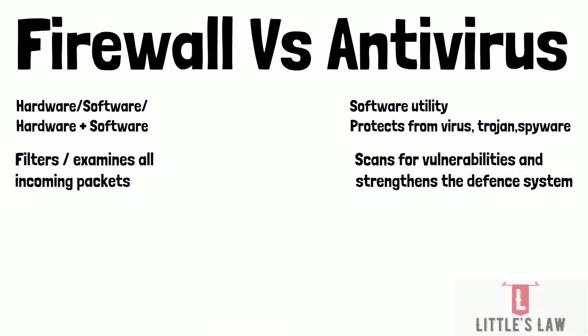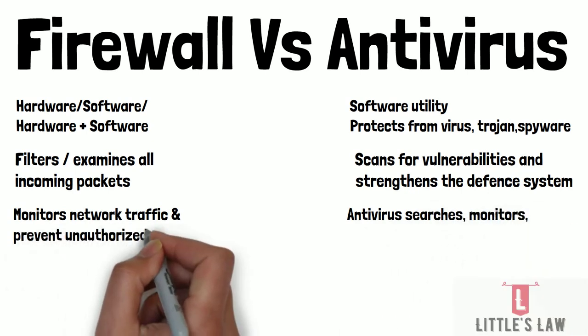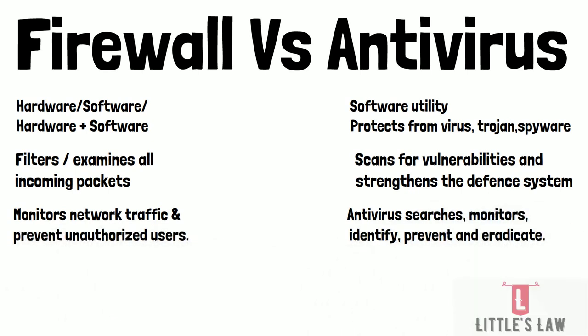When we talk about a firewall, it is referred to as a packet filter because it examines all incoming data packets for potentially malicious information. On the other hand, the antivirus scans for vulnerabilities in the computer system and makes the necessary adjustments to strengthen the system's defenses. The firewall's job is to monitor network traffic and prevent unauthorized users from accessing the system, while the primary role of antivirus is to search, monitor, identify, prevent, and eradicate any existential danger to the computer system.